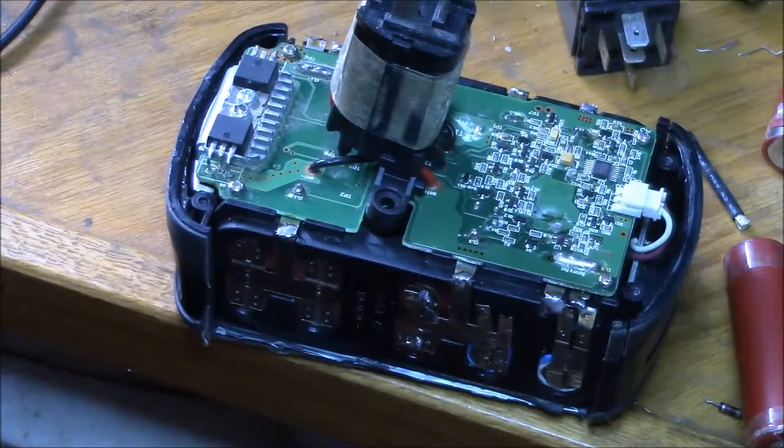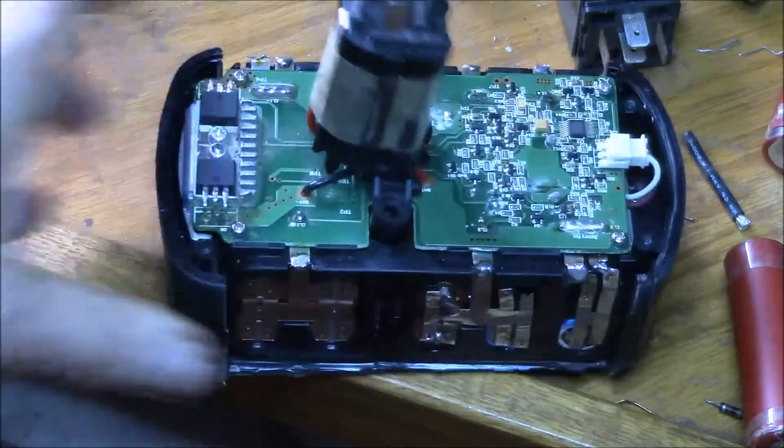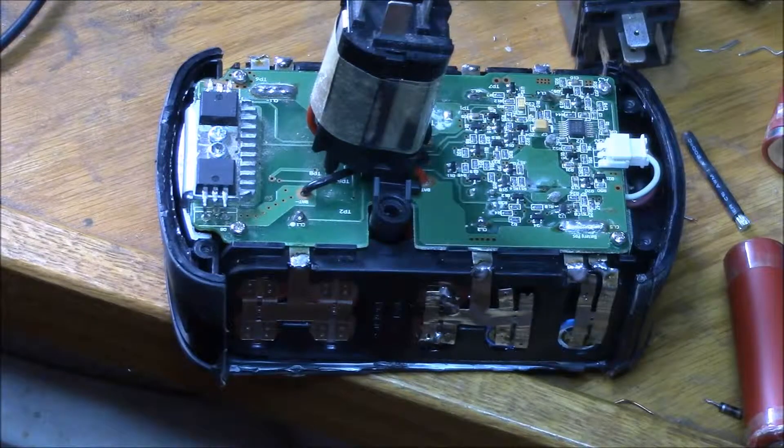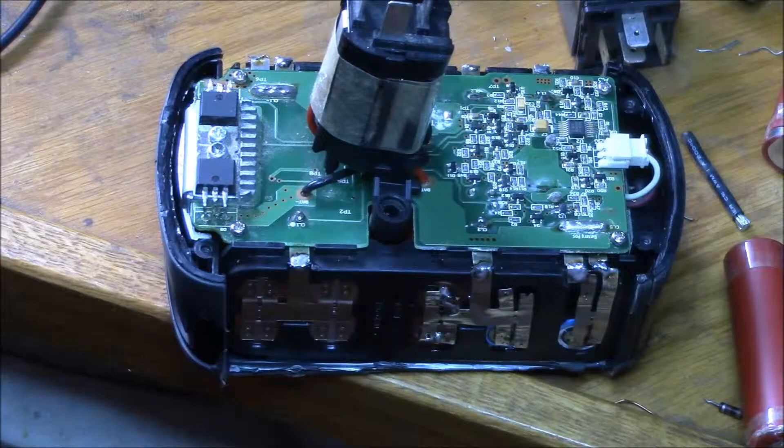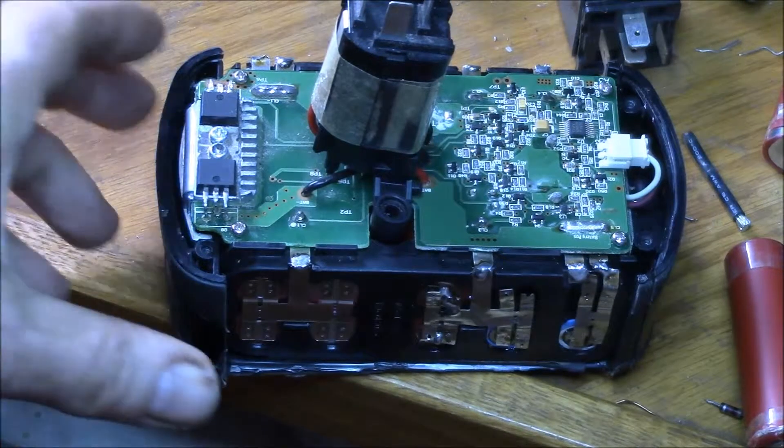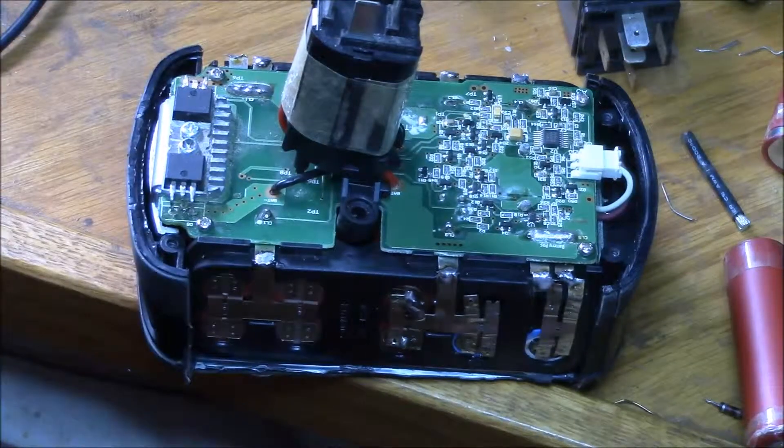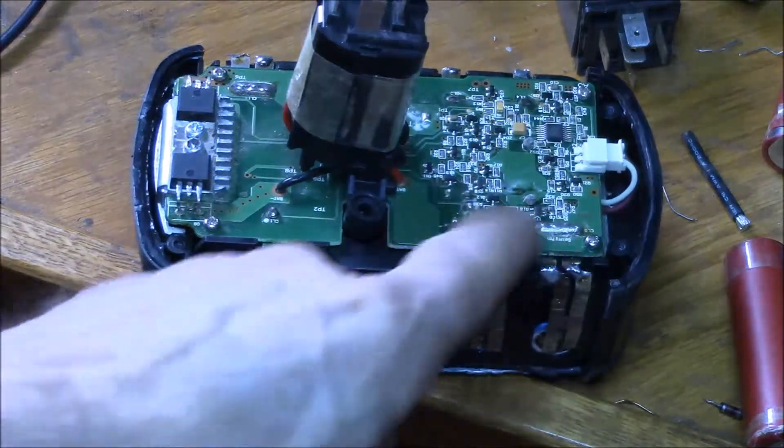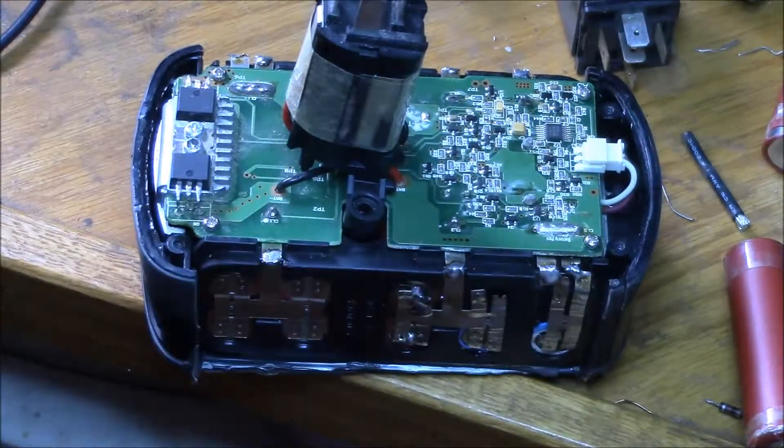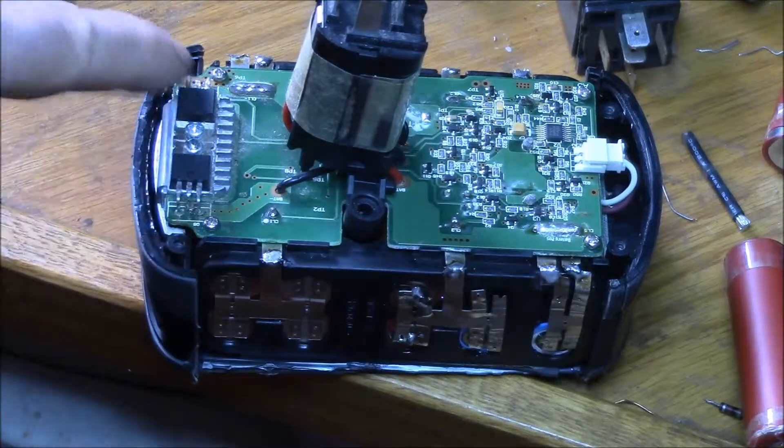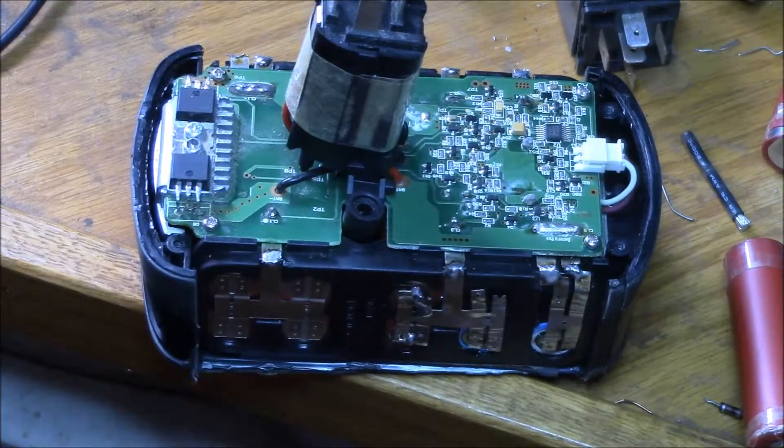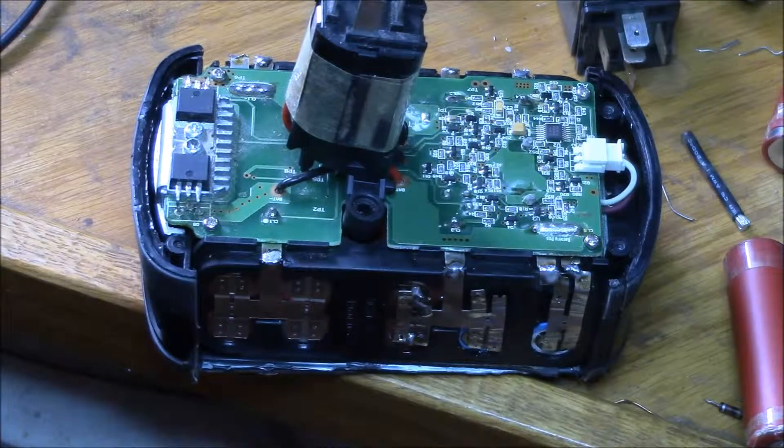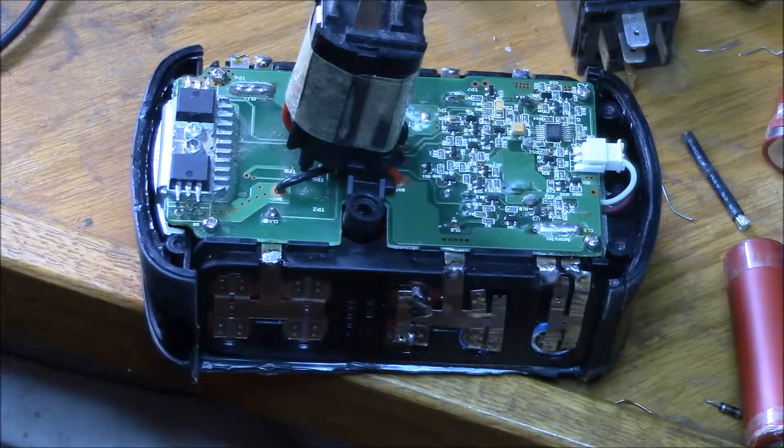But at least now I've got one of these early Craftsman C3 extended capacity packs that I can kind of play with, and see how it charges. Since it's all torn apart, I can measure voltages and probe the MOSFET pins, and haven't quite decided what I want to test, or how to test it yet.